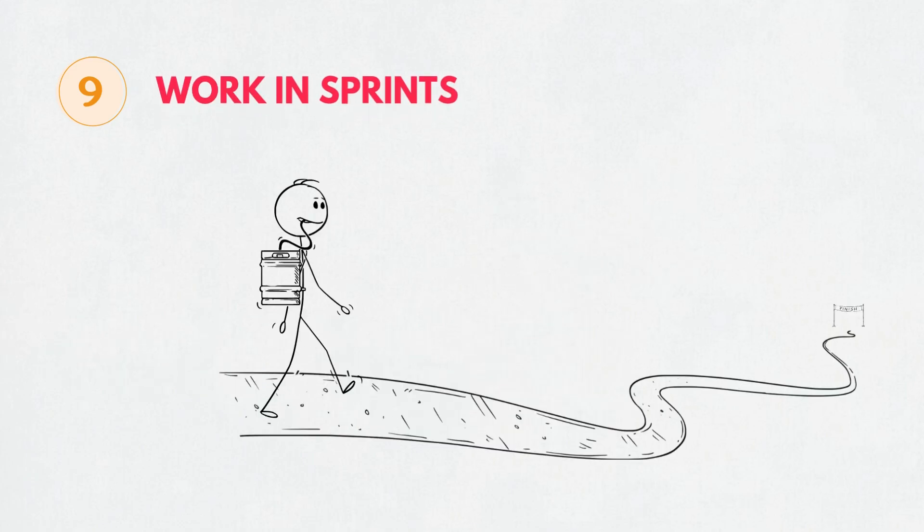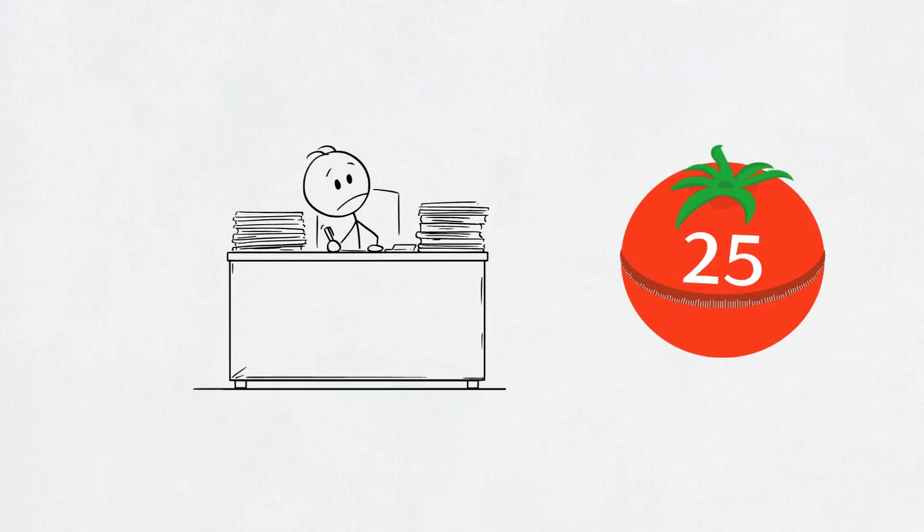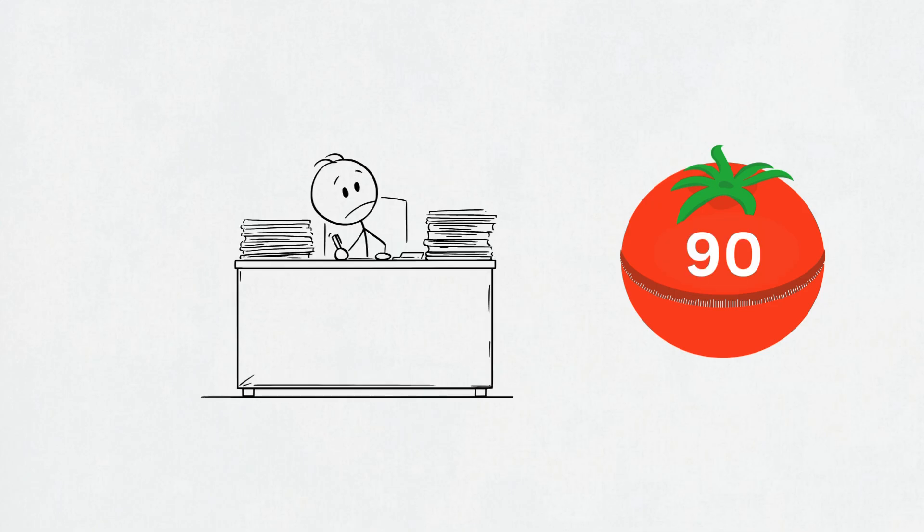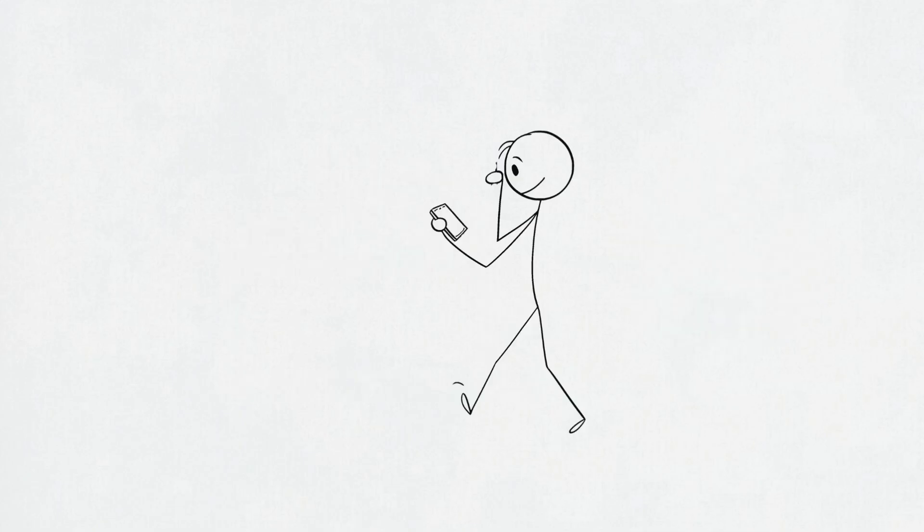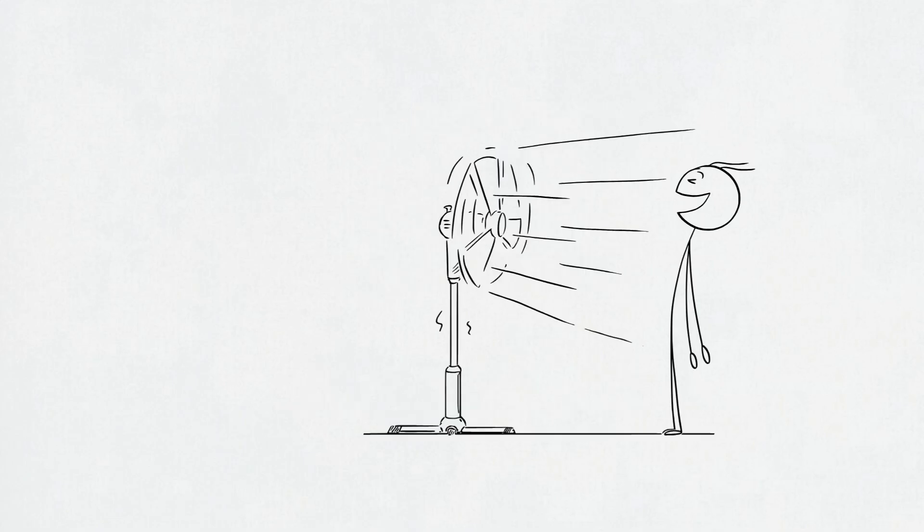Ninth, work in sprints, not marathons. Your brain is not a robot. Use Pomodoro. 25 minutes on, 5 off. Or go deeper. 90 on, 15 off. During breaks, don't scroll. Breathe. Walk. Touch grass. Reboot.